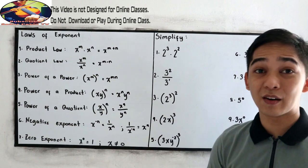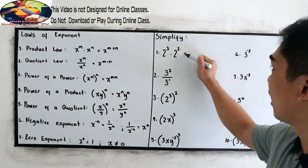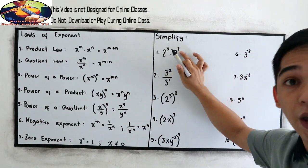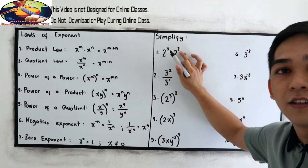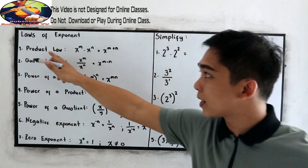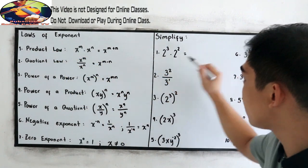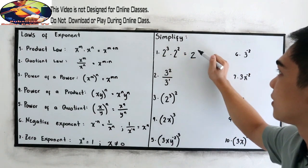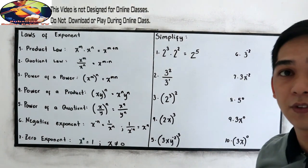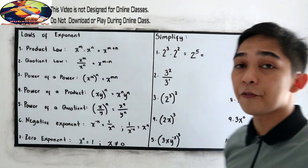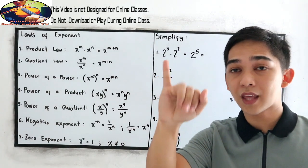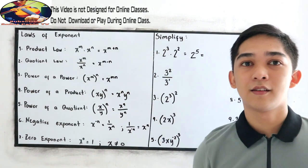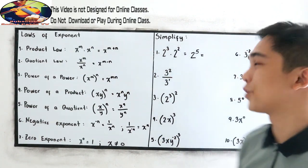Number 1: 2 cubed times 2 squared. Our base is 2, so we apply the product law — copy the base, then add the exponents: 3 plus 2 equals 5. Simplifying 2 raised to 5: 2 times 2 times 2 times 2 times 2 equals 32.